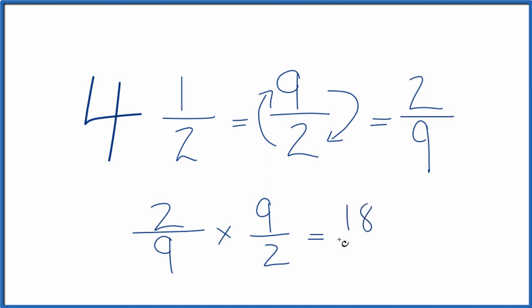2 times 9 is 18, 9 times 2 is 18, and 18 divided by 18, that is 1. So we did this part correctly. The reciprocal for 4 and 1 half is 2 ninths.